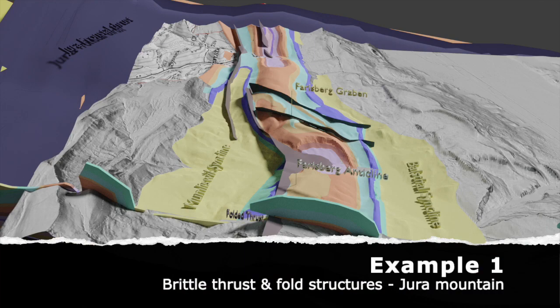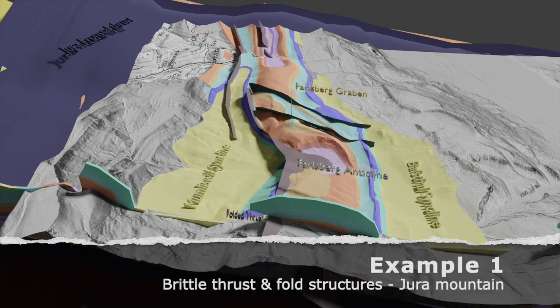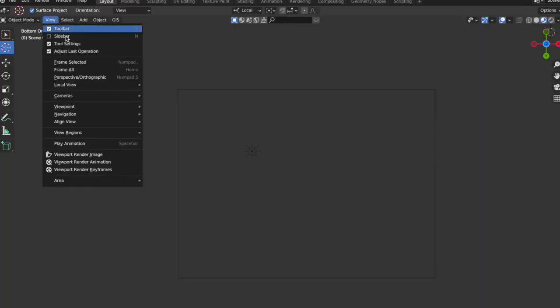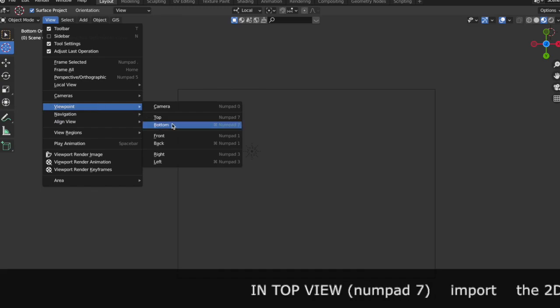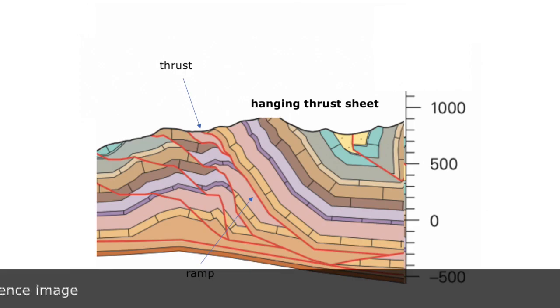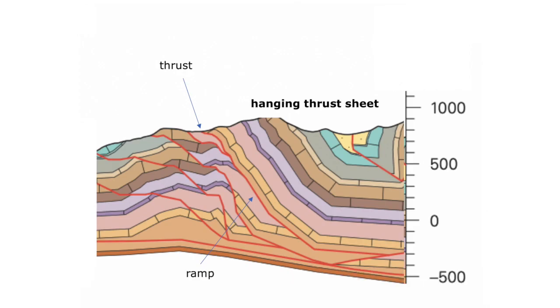We will construct a thrust sheet based on a 2D geological model. As a memoir I have summarized in this slide the steps we will follow. First go to top view and import the geological model as a 2D cross section. Import it as image reference or image background.